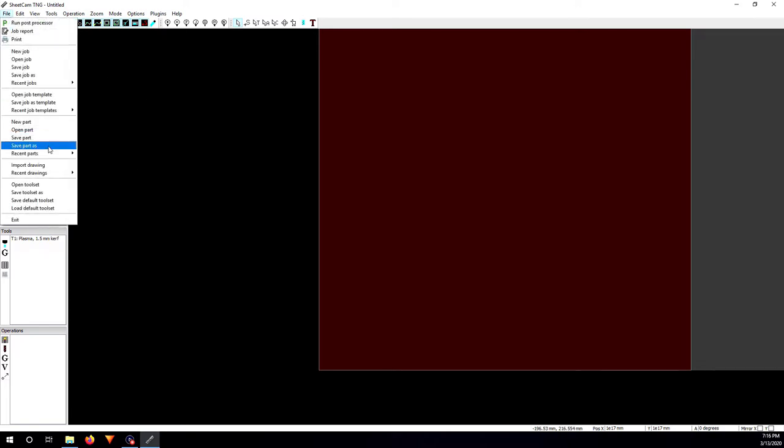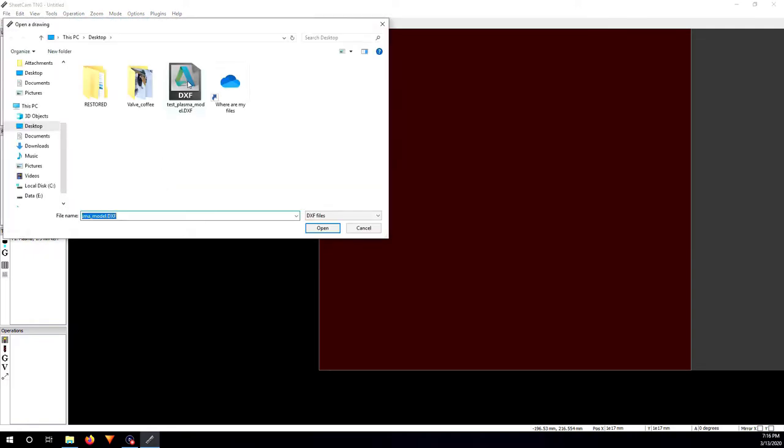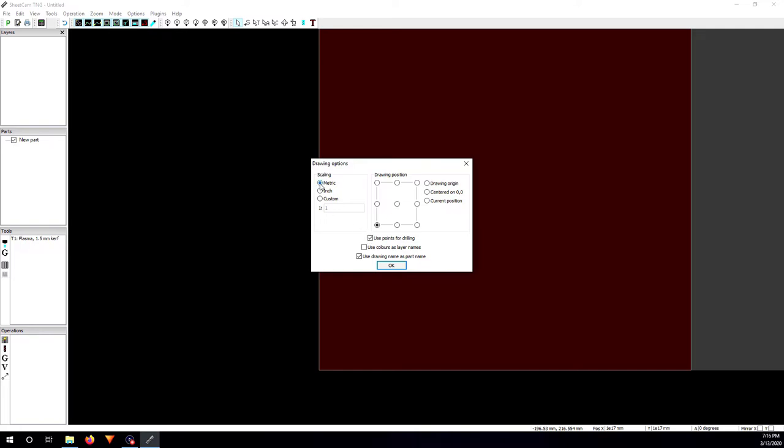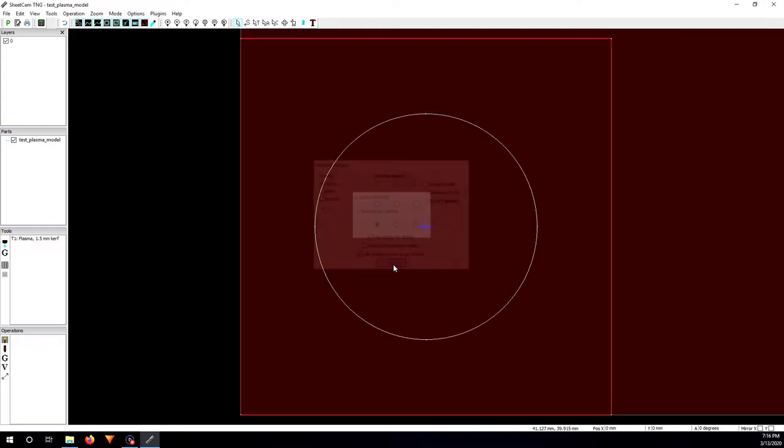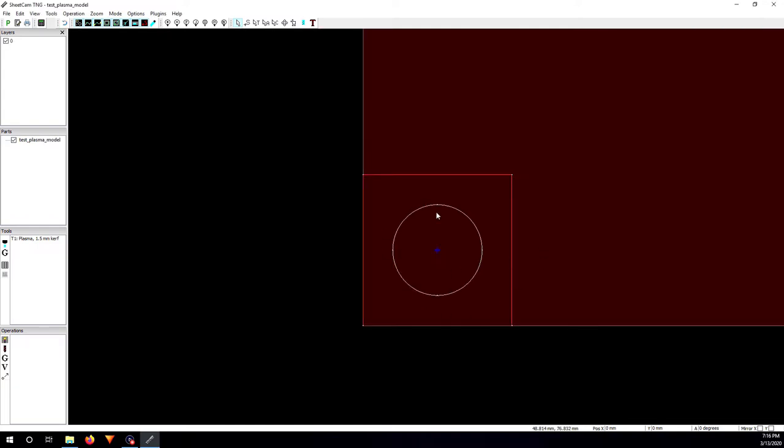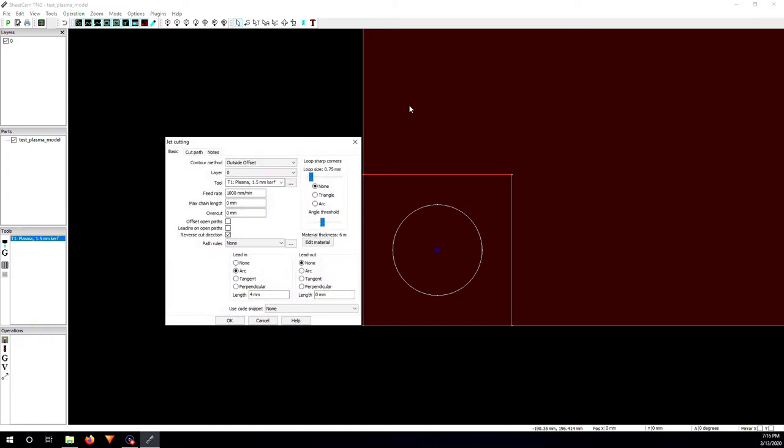Just go to file, import drawing, and choose a DXF file. This one I designed very quickly - it only has a square, it's in millimeters, and it has a circle in the middle to be cut out. Here it is. I'm going to create a simple tool here, plasma 1.5 kerf. I just create randomly for now. Then I go to operation, plasma cut. As you can see I have the feed rate of 1000mm per minute, and that's about it. I choose the arc, and you'll have to play around to find the best parameters.